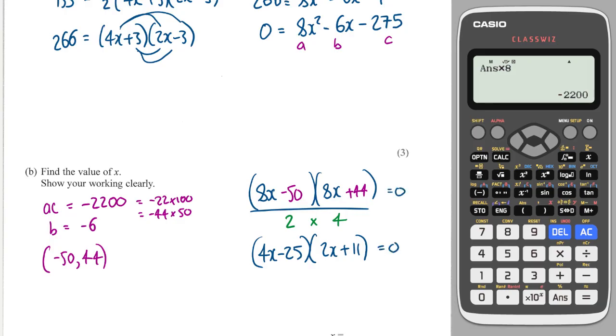So, my x values are 4x minus 25 equals 0, or 2x plus 11 equals 0, and in fact, it's the positive one that I'm going to need.